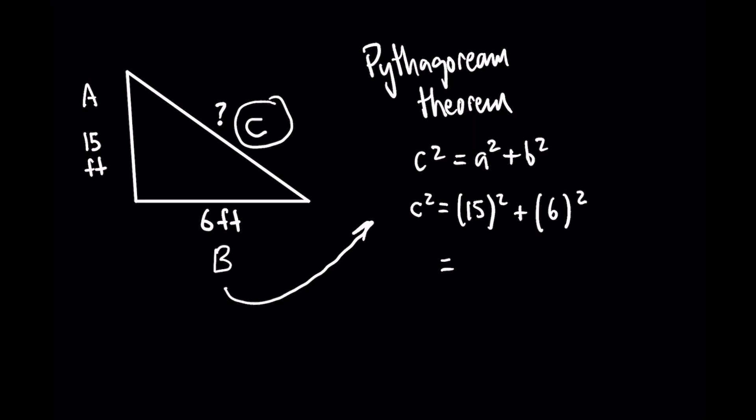And that's going to give you 225 plus 36. And when you add these two together, you should get 261.